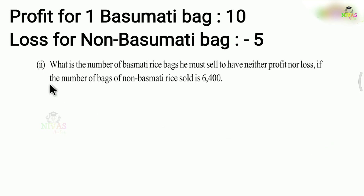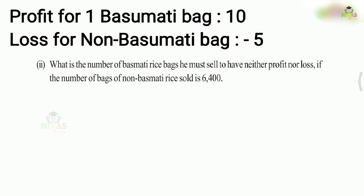Next problem: what is the number of basmati rice bags you must sell to have neither profit nor loss, if the number of non-basmati rice bags sold is 6,400? For 6,400 bags of non-basmati at minus 5 each, the total loss is 6,400 into minus 5, which is minus 32,000.